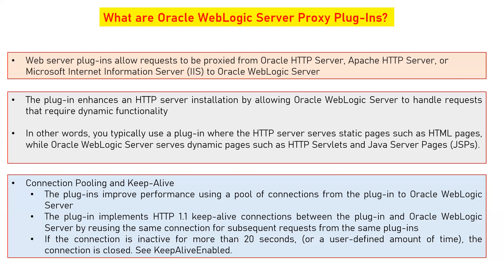The plugin improves performance using a pool of connections from the plugin to Oracle WebLogic server — keeping only healthy connections in the pool, wherever the WebLogic server is running in the backend. The plugin implements HTTP 1.1 keep-alive connections between the plugin and Oracle WebLogic server by reusing the same connection for subsequent requests from the same plugin. Similar to a data source, this pool is an active connection pool, meaning a connection is already established with your backend application server. If the connection is inactive for more than 20 seconds, or a user-defined amount of time, the connection is closed.